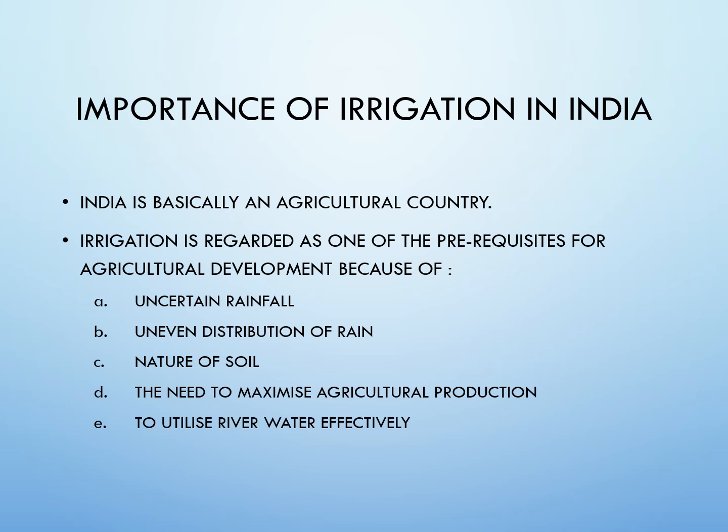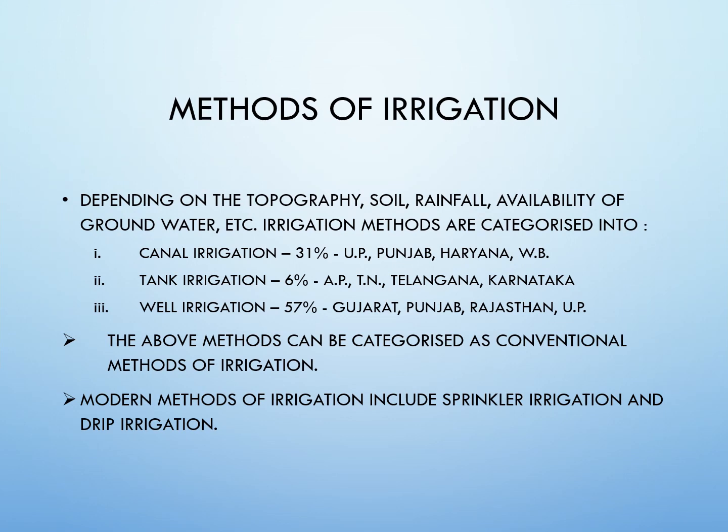Irrigation is regarded as one of the prerequisites for agricultural development in India, because of uncertain and uneven distribution of rainfall, the nature of soil, the need to maximize agricultural production, and to utilize river water more effectively and efficiently. Depending on topography, soil, rainfall, and availability of groundwater, irrigation methods are categorized accordingly.